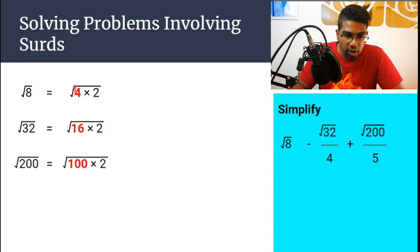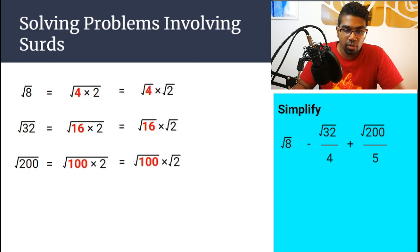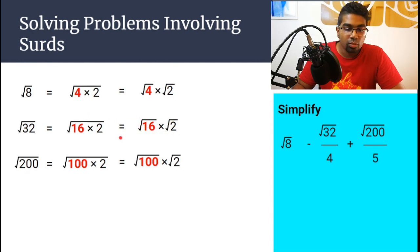Whenever we have square root of a number multiplied by another number, we can separate them out. So square root of 4 times 2 can be written as square root of 4 times square root of 2. The same as square root of 16 times 2 can be written as square root of 16 times square root of 2. So we are basically separating the number, both still have square root. And then square root of 100 times 2 can be written as square root of 100 times square root of 2.